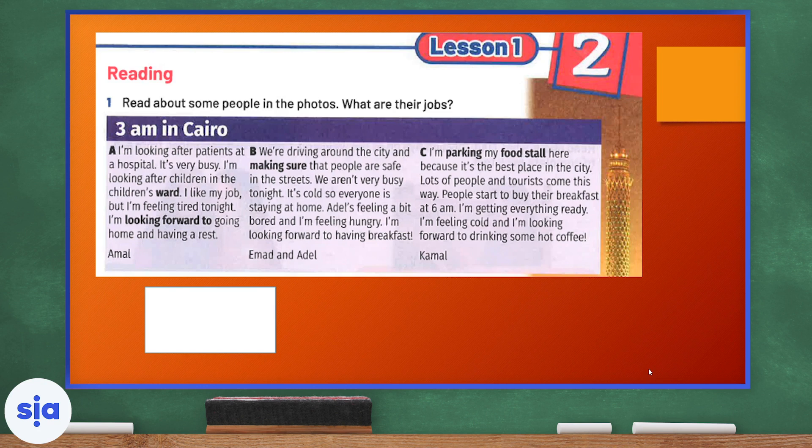Now, I want you to guess which of these descriptions show which jobs. Of course, 1a, that's the nurse. 2b, the police officer. And 3a, a street food seller.